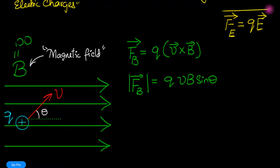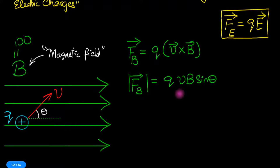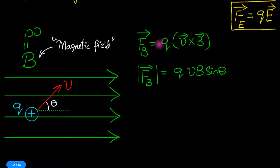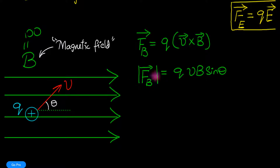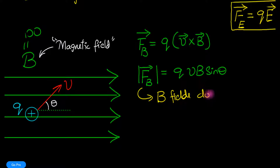The first major difference you should notice is that the magnetic force depends on velocity. Looking at the magnitude: if velocity is zero, the force is zero. In other words, magnetic fields — or B fields — don't affect stationary charges.